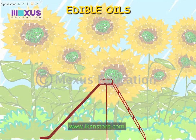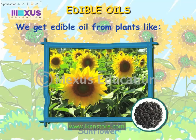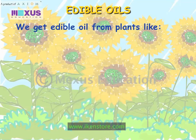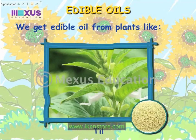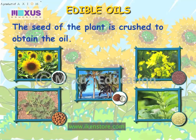Edible oils. We get edible oil from plants like sunflower, groundnut, coconut and till mustard. The seed of the plant is crushed to obtain the oil.